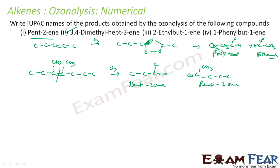Let's see the third one: 2-ethyl-but-1-ene. Let's first draw bute: one, two, three, four. At second position I have ethyl group, so I have ethyl group here. And at 1-ene, so this is my compound.